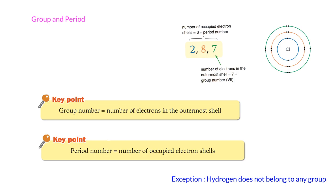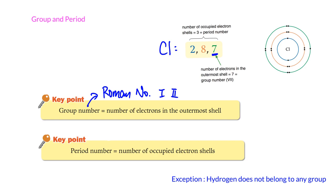In the periodic table, elements have two numbers representing their coordinates. The first is called the group number and the other is called the period number. The group number represents the number of electrons in the outermost shell. For example, chlorine has electronic configuration 2,8,7 — seven electrons in the outermost shell — so its group number is VII. Group numbers are written in Roman numerals: I, II, III, IV, V, VI, VII, or VIII, and sometimes VIII is also written as zero.